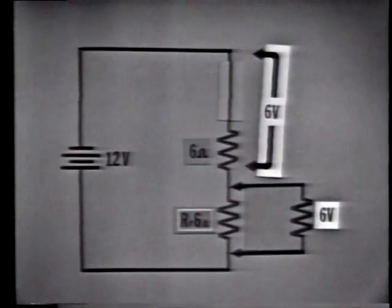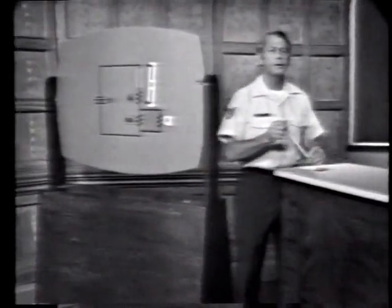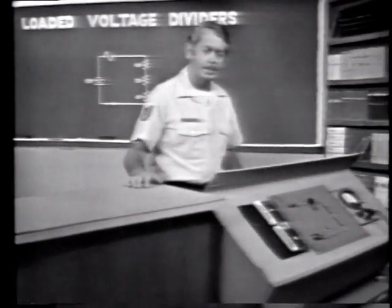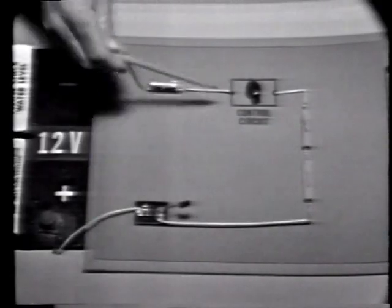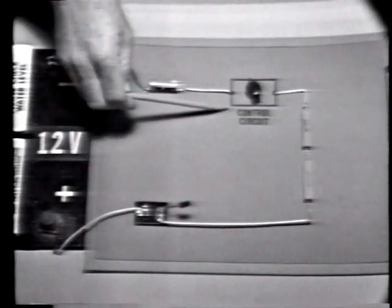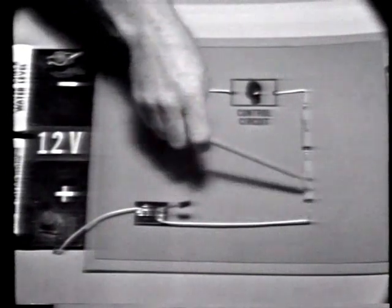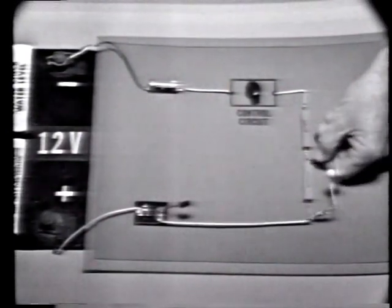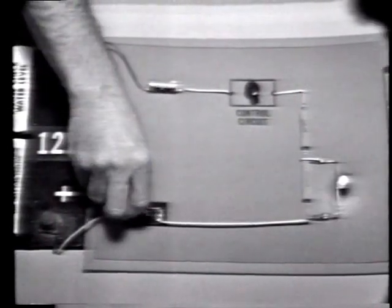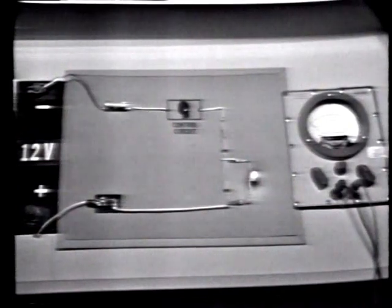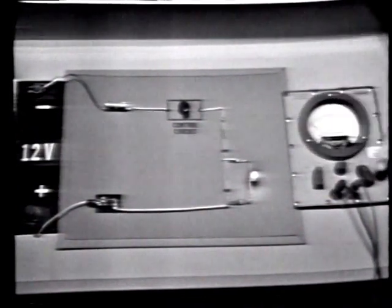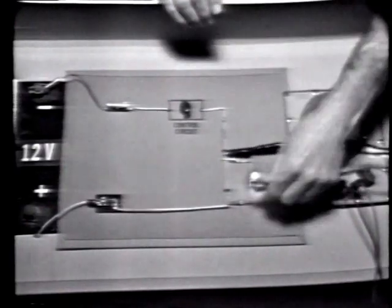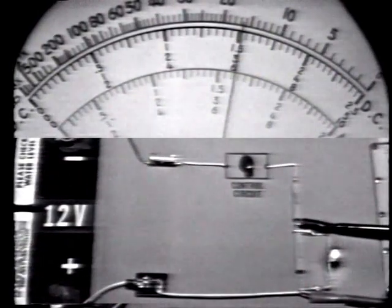Let's see if we can maintain a constant voltage under varying load conditions. This is the circuit — the key component is the control circuit. Its purpose is to maintain a constant voltage across the rest of the voltage divider, even with a changing load. We'll use bulbs to load the circuit, so I'll connect one here and apply power. Let's use the voltmeter to monitor the voltage to the load device, with the function switch on DC volts and the 10-volt range. The voltage is about 6 volts.